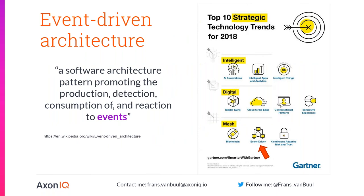Let's start with events. Event-driven architecture is a very big thing — recognized as one of the major trends for 2018 by Gartner. It's a software architecture that promotes using events, defined as descriptions of stuff that happened in the past. They have already taken place, which gives them very specific properties: events don't change because they have already taken place, and they cannot fail. An event as such is immutable — it just describes a fact about the past.